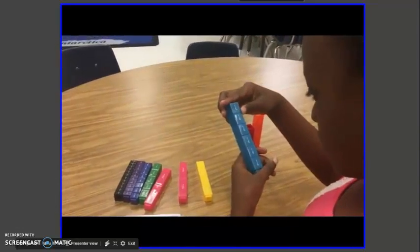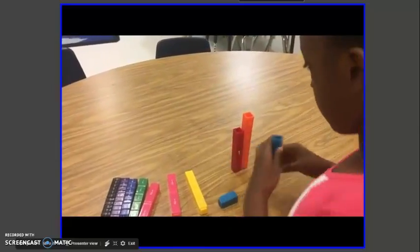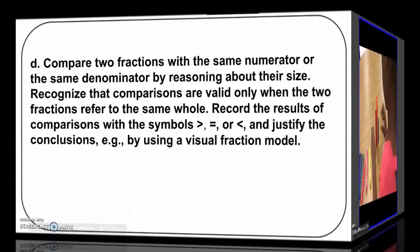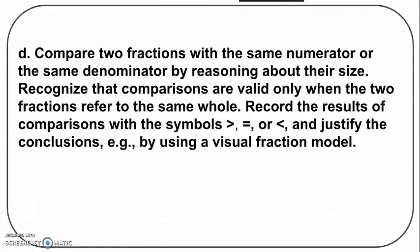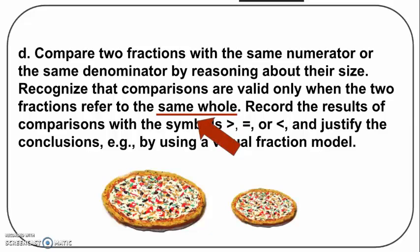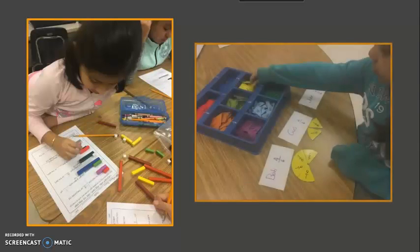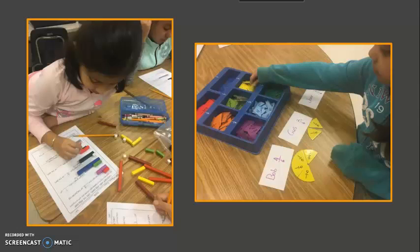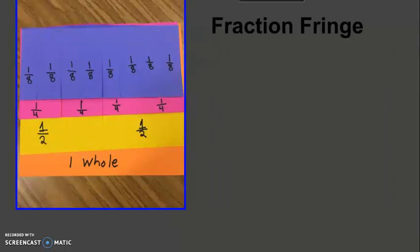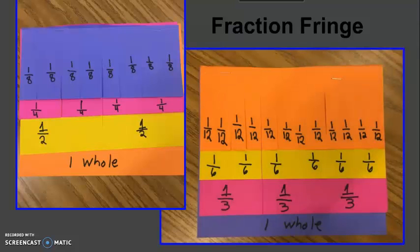Length models allow students to create and compare fractions of various sizes without limiting their thinking to part-whole relationships. The last component of 3NF3 focuses on comparing fractions. The comparison situations are limited to fractions with the same numerator or the same denominator, with an emphasis on only comparing fractions that have the same size whole. Students will record results using appropriate symbols while justifying their thinking with fraction models, and will reason about the size of the pieces as they compare like numerators and like denominators. In addition to pre-made fraction models, it is very beneficial for students to create their own models to deepen conceptual understanding of the size of each unit fraction.